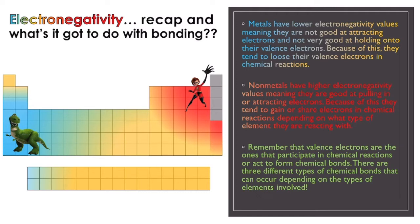Metals have lower electronegativity values, meaning that they're not good at attracting electrons towards themselves, and they're not even very good at holding on to their own valence electrons. Because of this, they tend to lose their valence electrons in chemical reactions when chemical bonds are formed.